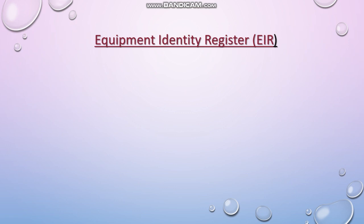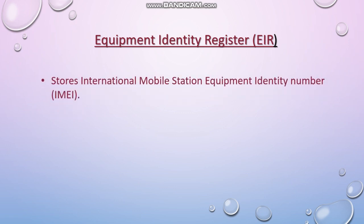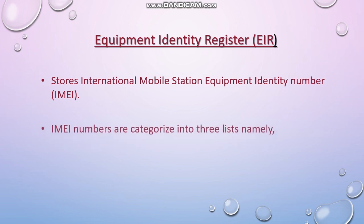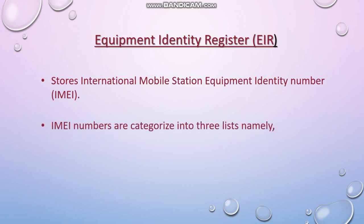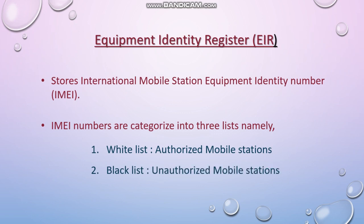Equipment Identity Register stores the IMEI number, which is short for International Mobile Station Equipment Identity — this is the number of the mobile phone given by the manufacturer. These IDs are categorized by the EIR into three lists: White list mobiles are authorized devices; Black list contains devices which are unauthorized by the telecom operator — for example, stolen mobile phones will be put into the black list after you inform the authorities. Gray listed ones are devices identified as risky, and the operator will investigate those for any irregularities.